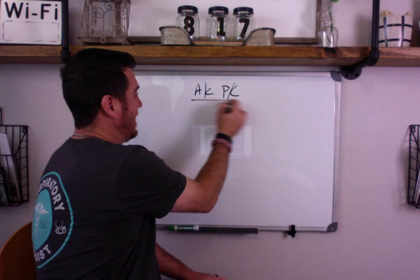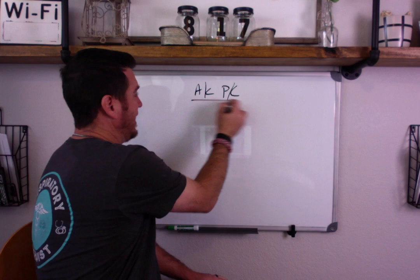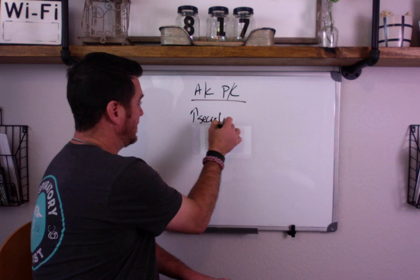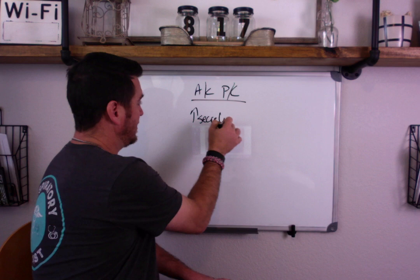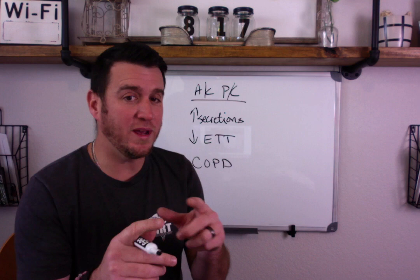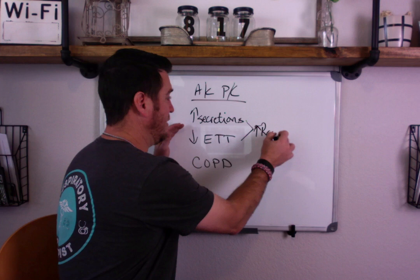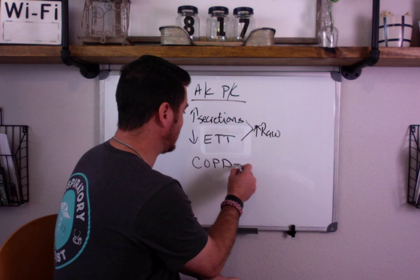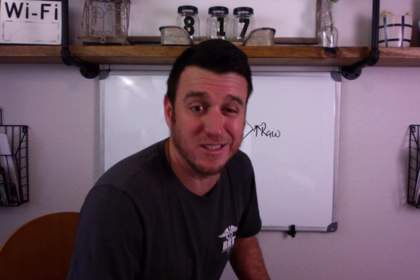Now remember we're in AC PC. The AC is really not important here except for the fact that every breath is going to be a machine controlled breath. So you're talking about increased airway secretions, a smaller ET tube, and COPD. Now what we know about this is that increased airway secretions and a smaller ET tube are going to increase airway resistance. Increased airway resistance in pressure control equals a smaller tidal volume. Now COPD gets a little more complicated so we're going to come back to that in just a second.